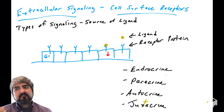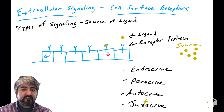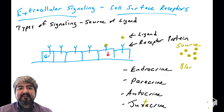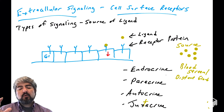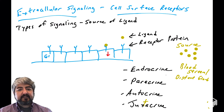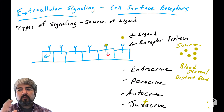These different types of signaling refer to the source of the signaling molecule or the ligand. Endocrine signaling involves molecules we call hormones, and it typically refers to distance signaling. A gland might be located in one part of the body, release its signaling molecule — the hormone — into the bloodstream, and that hormone travels all through the body and accesses receptors on distant cells. Endocrine signaling typically refers to distance signaling; it involves hormones that enter the bloodstream and can travel all through the body.